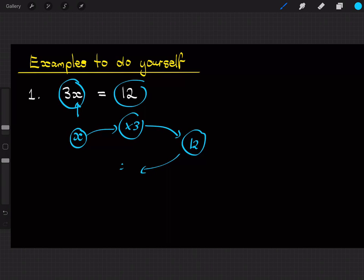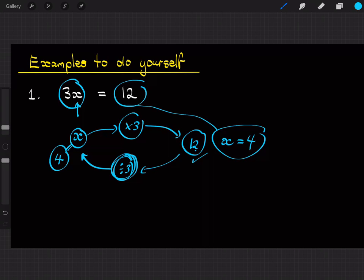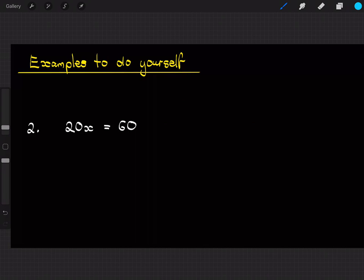Moving back the other way, we would come back and do the opposite. So the opposite of timesing by 3 is dividing by 3, which should give us a value of x. So to work it out, we've got 12 divided by 3, which equals 4. So the answer is x equals 4, and we can check that because 3 times 4 does equal 12.